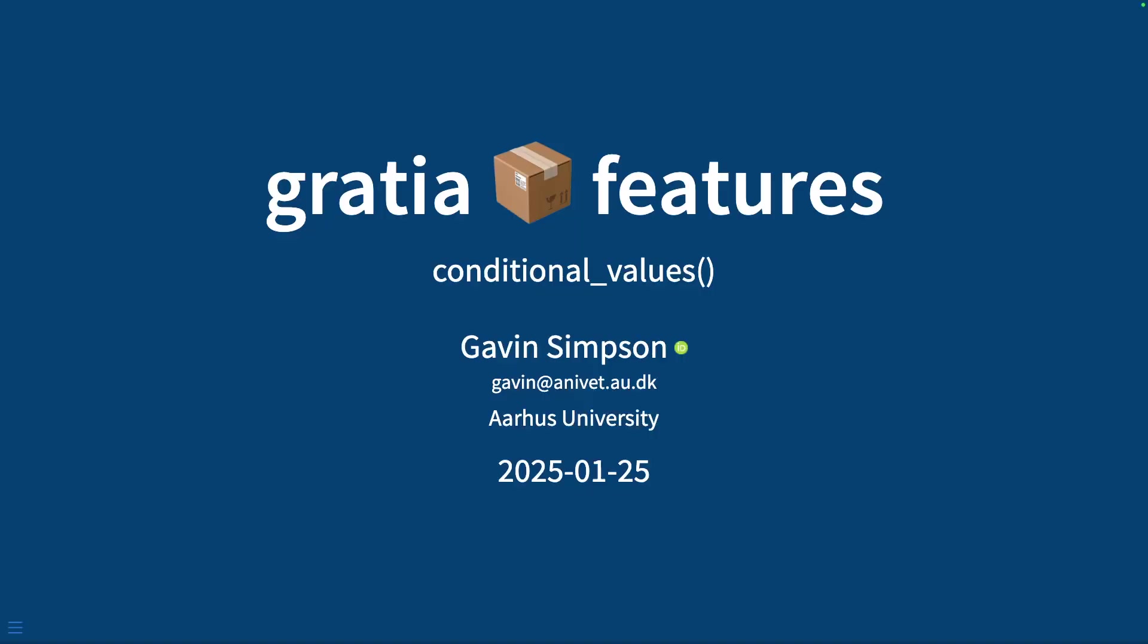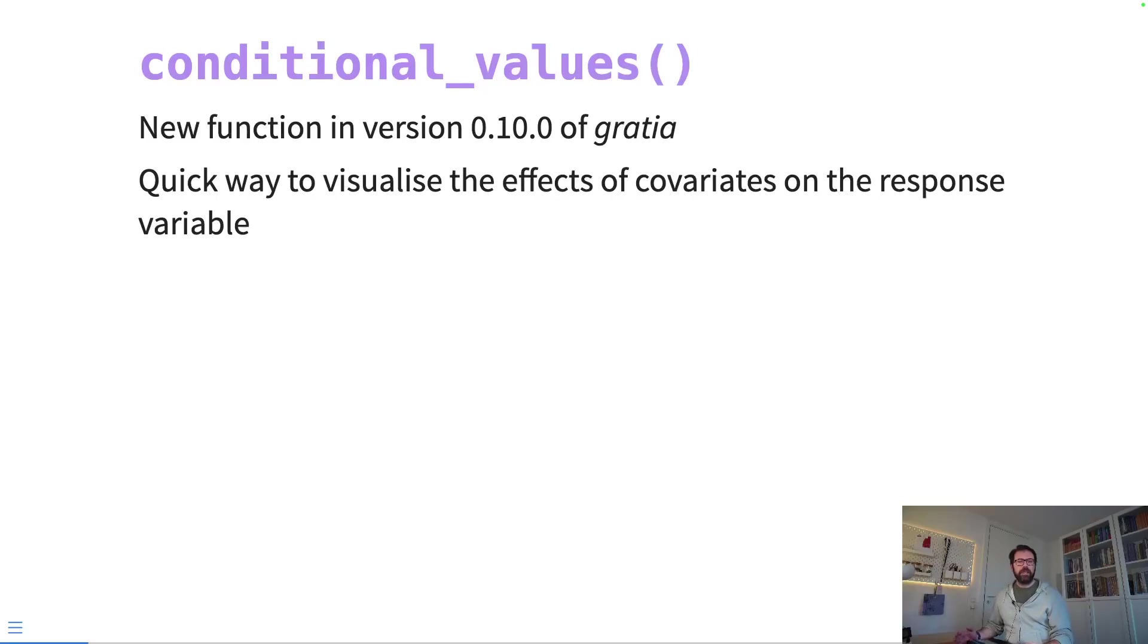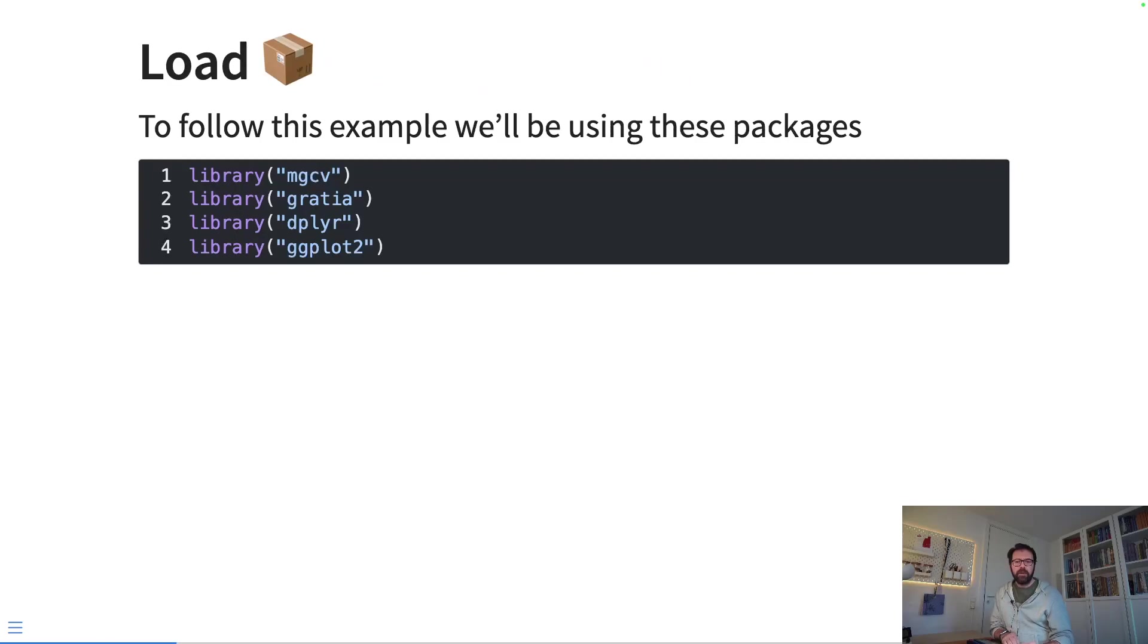Conditional_values is a new function in version 0.10 of gratia, and it was designed to be a quick way to visualize the effects of a covariate on the response. We're going to be using a particular example here using some chick weight data. To follow along with this, you're going to need the mgcv package for fitting GAMs, obviously gratia, and then you'll need the dplyr and ggplot packages too.